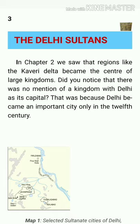In Chapter 2 we saw that regions like the Kaveri Delta became the center of large kingdoms. Did you notice that there was no mention of a kingdom with Delhi as its capital? That was because Delhi became an important city only in the 12th century.